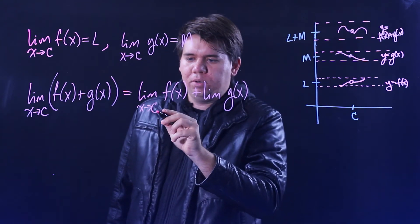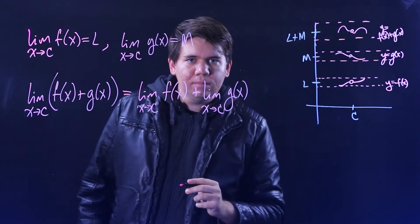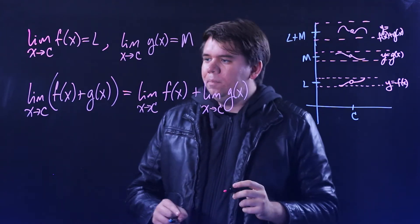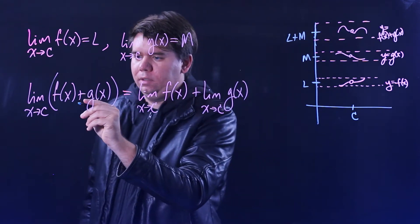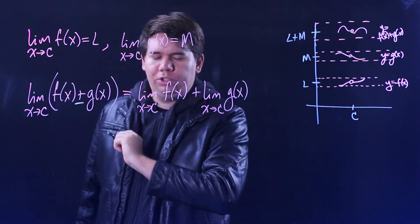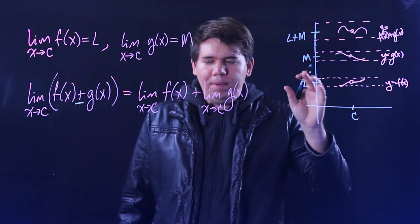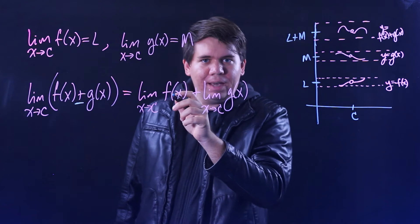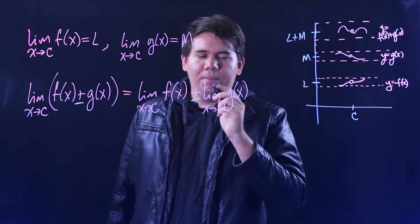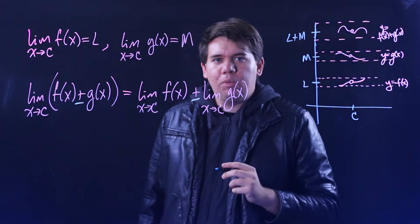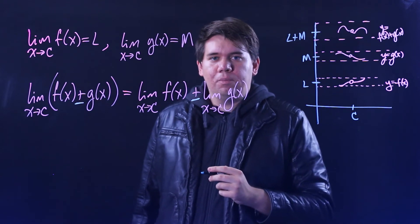Similarly, if we had done F of X minus G of X, you would have that the limit would just be whatever F of X is approaching, minus the limit of whatever G of X is approaching.